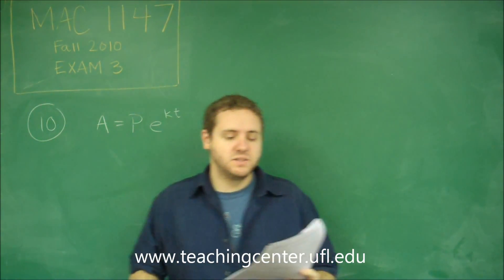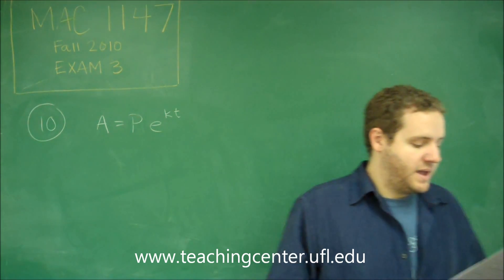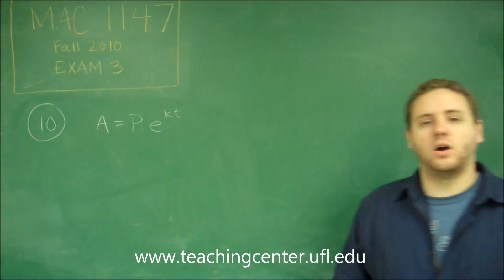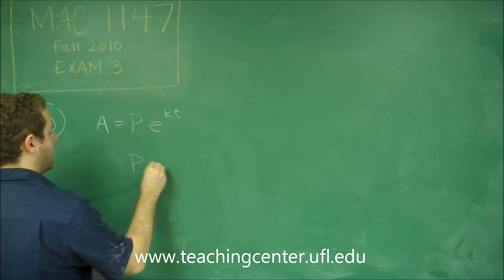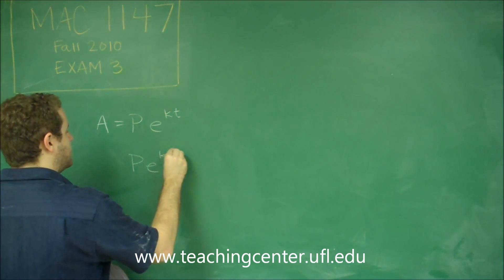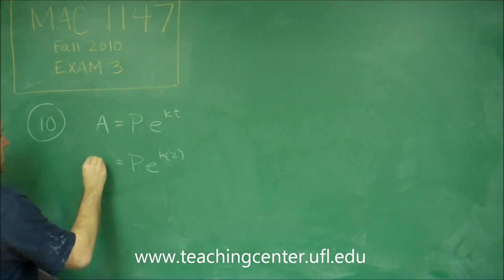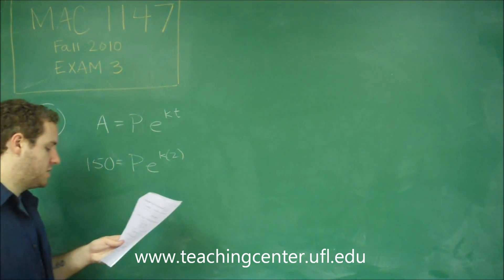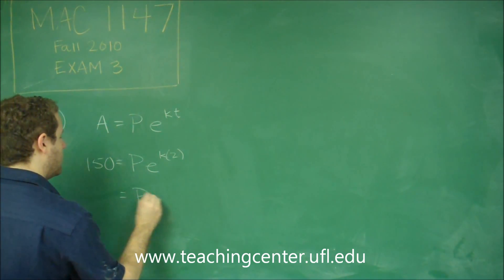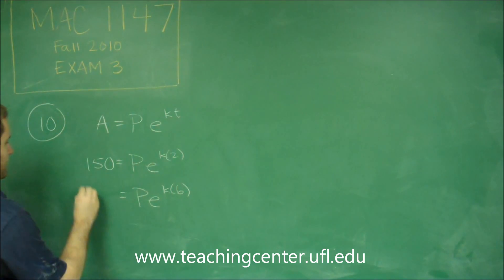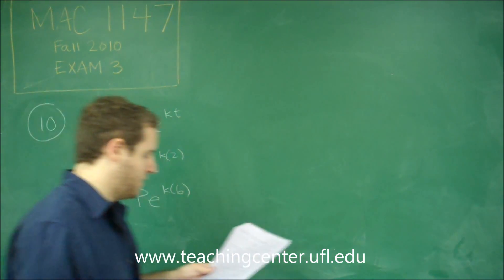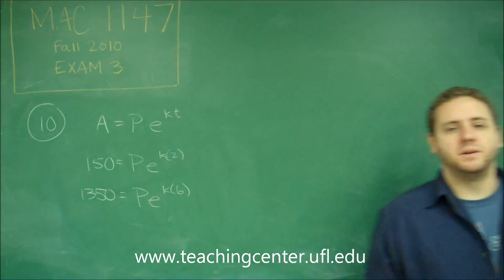Let's set up both equations for what we have. After 2 hours there are 150. So we don't know how much there were to begin with, but we know that if T is 2, our amount is 150. We also know that after 6 hours there are 1350.